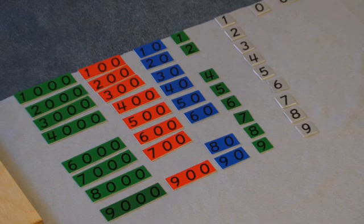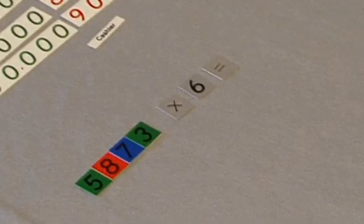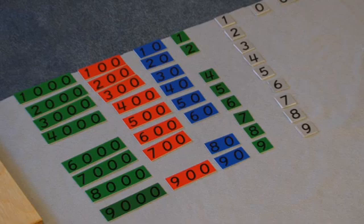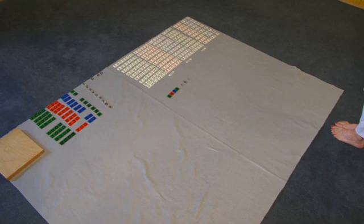The colored numerals are for the multiplicand. So for this problem the multiplicand is 5873 and the gray numerals will be used for the multiplier. If we look at the gray numerals on the rug we can see we have the numerals one through nine, a single zero and a double zero because we'll be using this for our multiplier even when we have multi-digit multipliers.